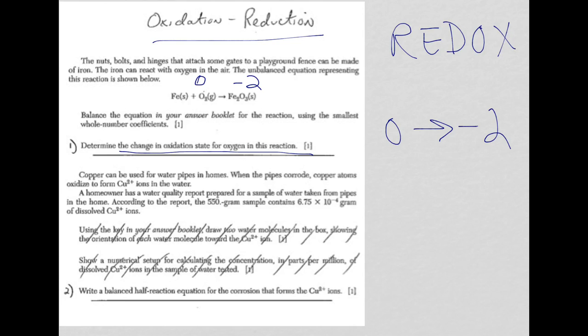All right. So, for question two here at the bottom, this is a separate question with a separate reading passage. And you're asked in question two to write a balanced half reaction equation for the corrosion that forms the copper two-plus ion.